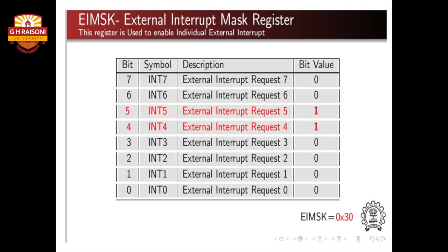To enable or disable a certain interrupt, we require the EIMSK register, which is the External Interrupt Mask Register. Its main function is to enable or disable the external interrupts to be used by the microcontroller. As seen in the table, the values of INT4 and INT5 are set to 1 since these are associated with the two motors on the bot.